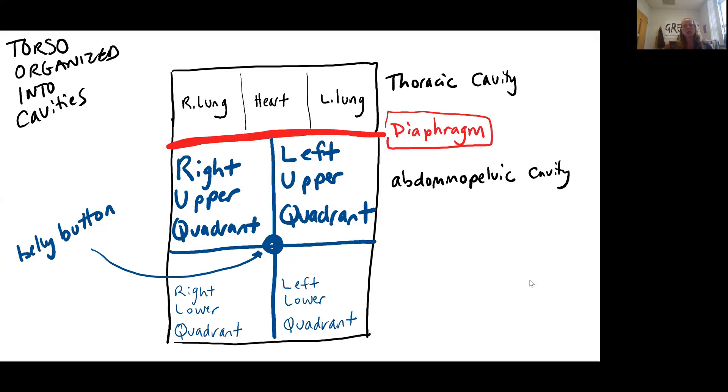The next thing we want to do is to look at how the abdominal pelvic cavity is organized. Now this is not a natural organization the way thoracic and abdominal pelvic cavity is a natural organization, meaning this is something that humans have developed in order to talk about the anatomy of the abdominal pelvic cavity. So we have two methods of dividing up the abdominal pelvic cavity.